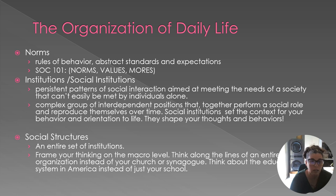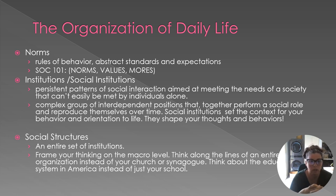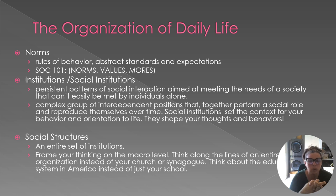A value is a more tightly held rule for behavior — think be honest, don't steal, don't be violent. Those are values in our society. Some values are codified by law while others are not. Don't think of these as three separate categories; think of it as a rainbow where they bleed into each other. A more is a value so strictly held in our society that it's essentially a taboo — things like rape, murder, or pedophilia. A norm is just an everyday rule for behavior.